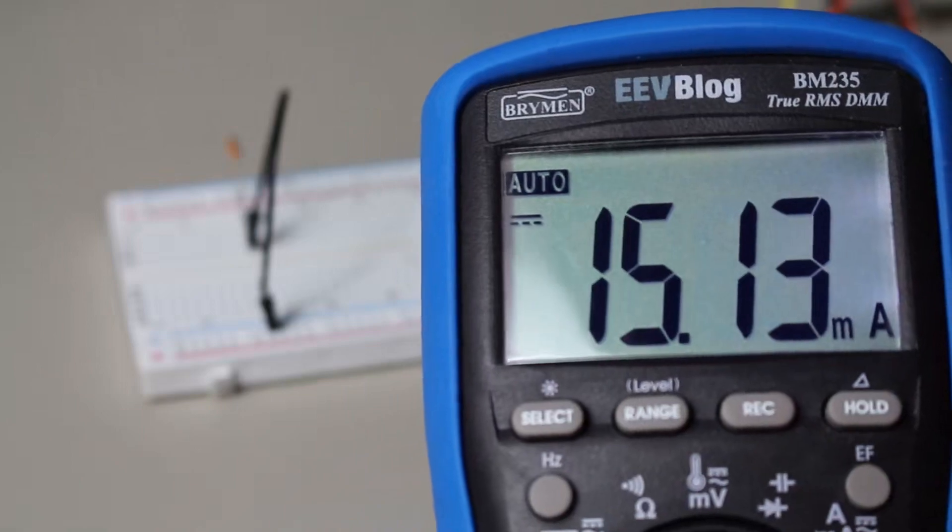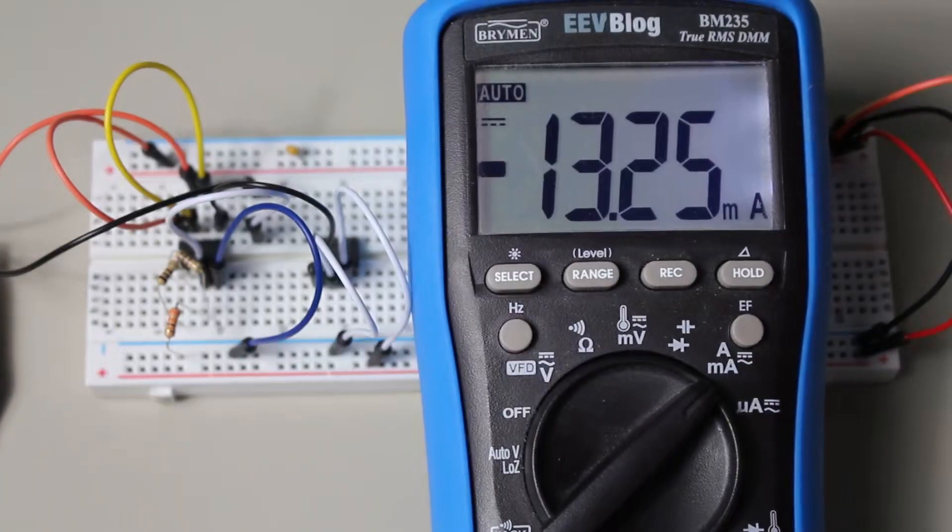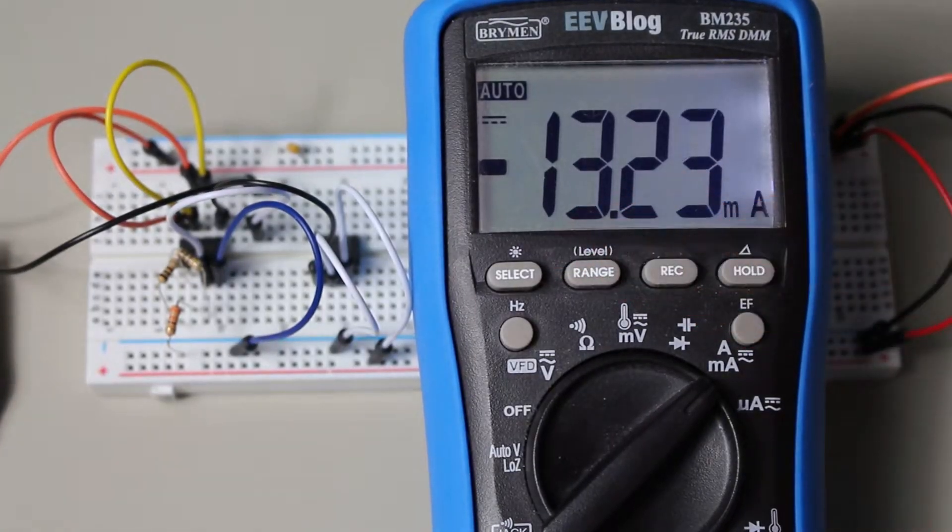And again, under normal positive conditions, we should get a current of 15 milliamps. So inversely, we should get negative 15 milliamps with a negative resistor. And we are correct, we get a reverse current of about 15 milliamps.